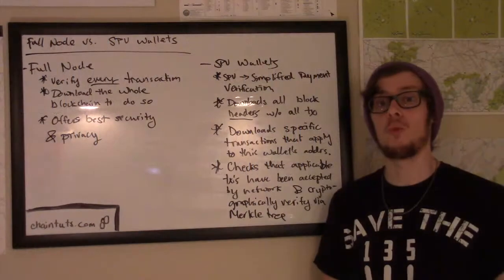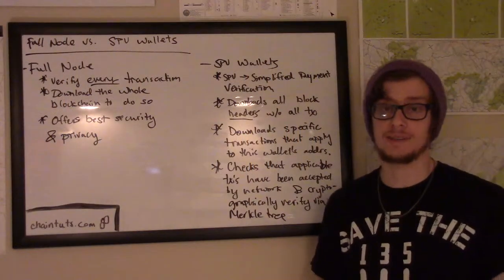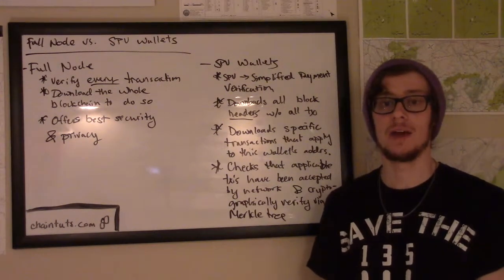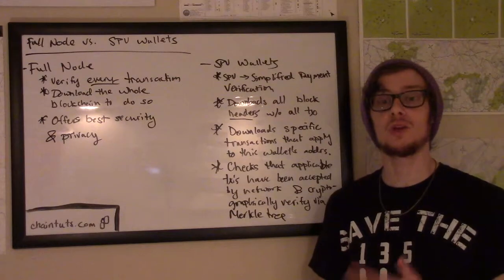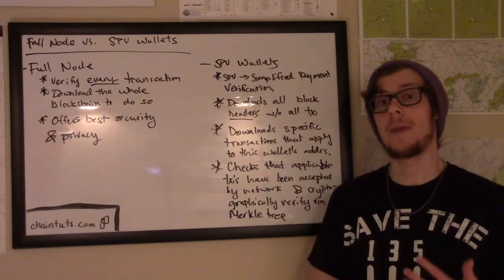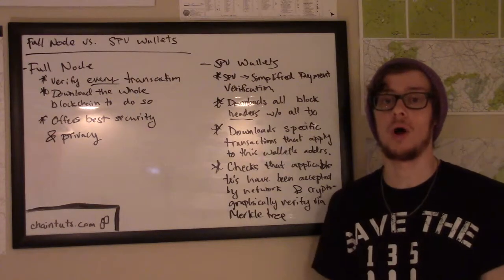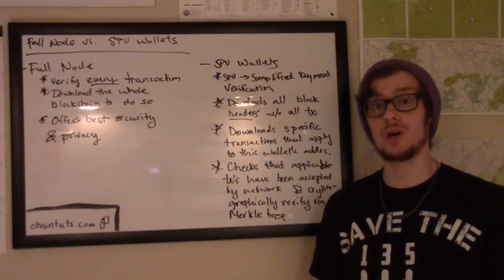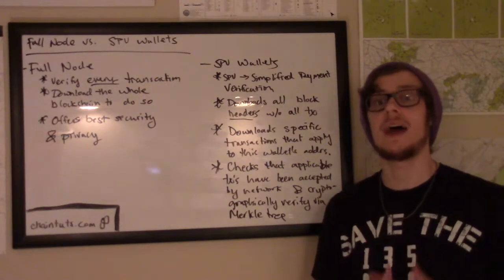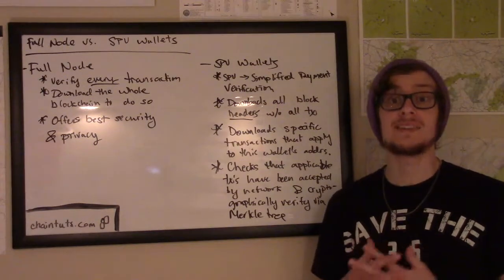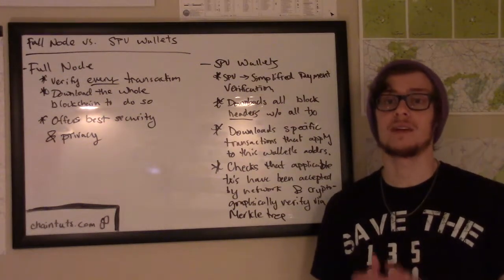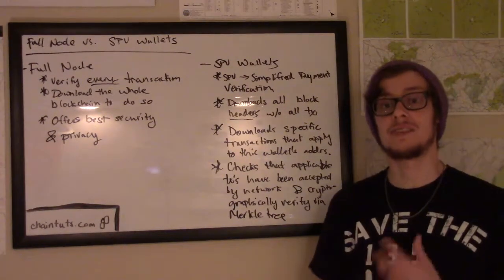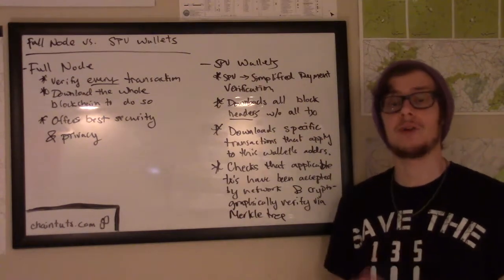Because these full node wallets download the entire blockchain with all transaction data, they're able to cryptographically verify every single transaction in the blockchain. So for a particular wallet user, all of the payments that are paid to their addresses included in their wallet can be cryptographically verified, and that way the node knows for sure that these transactions are valid and have been accepted by the network. Because they can verify that those transactions are in fact accepted by the network, the wallet knows that the user's money is theirs and will be accepted when new transactions are created and sent out to the rest of the network.